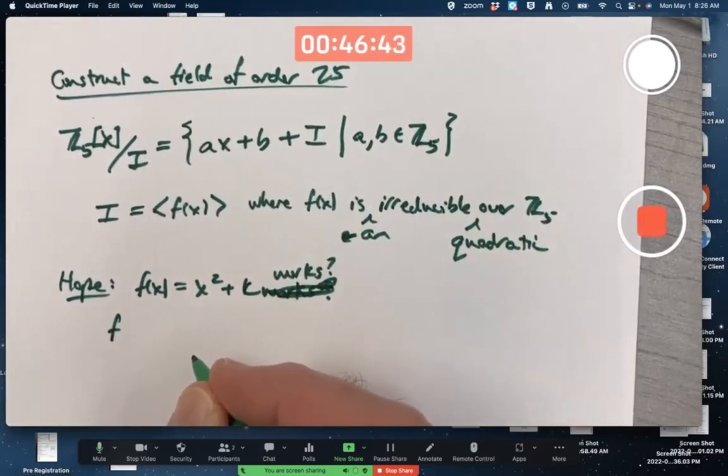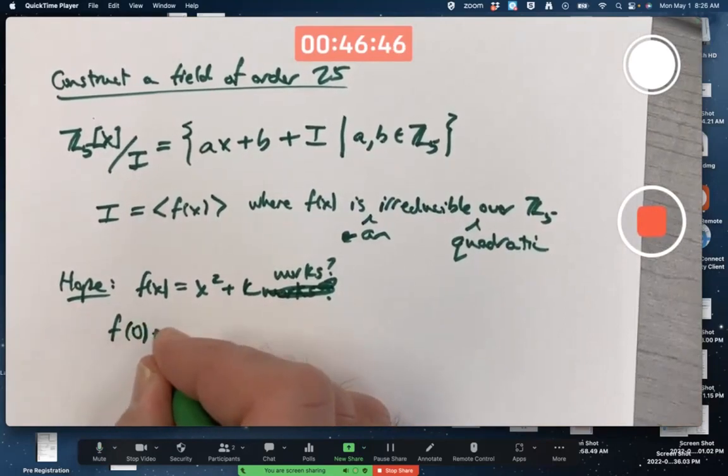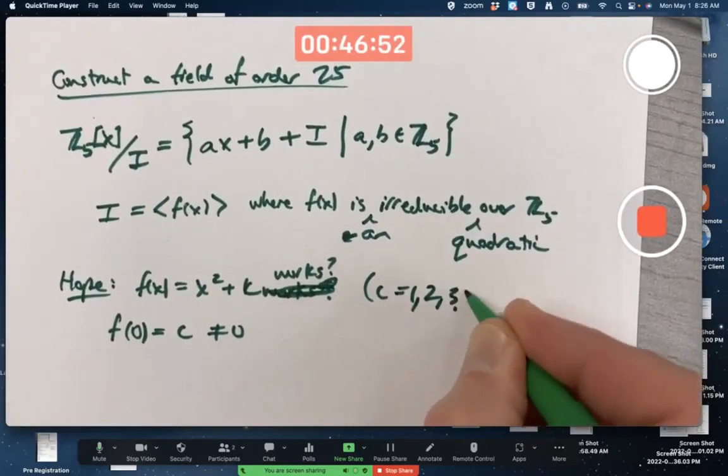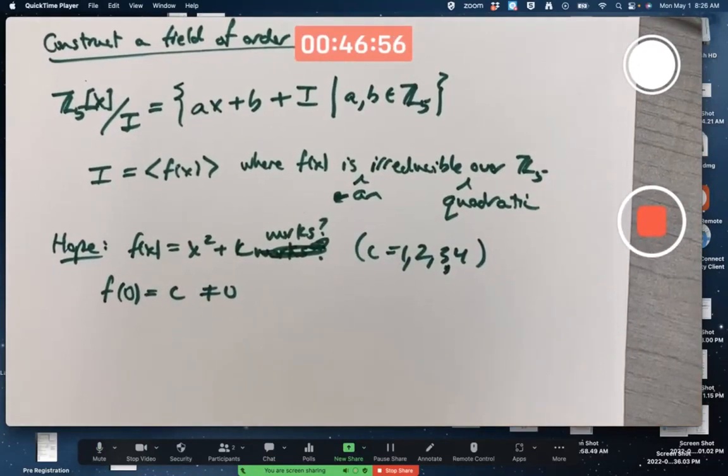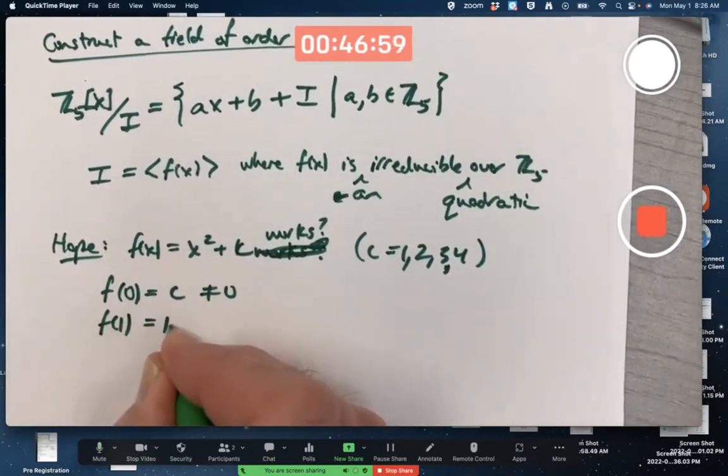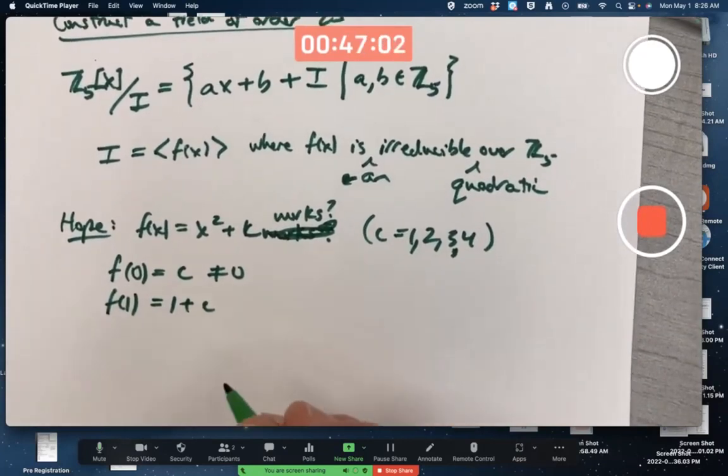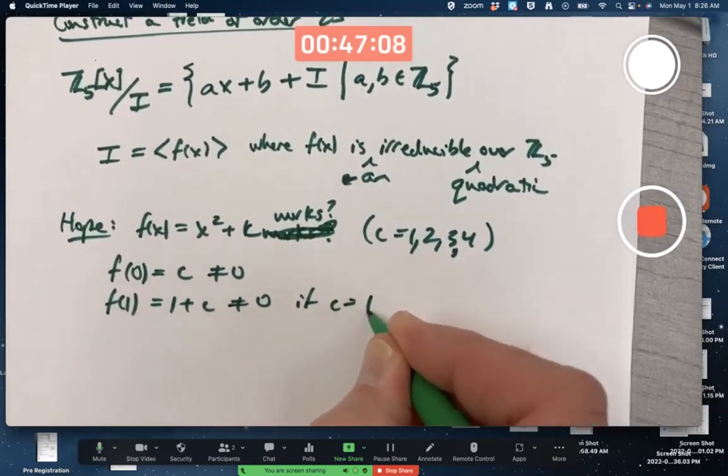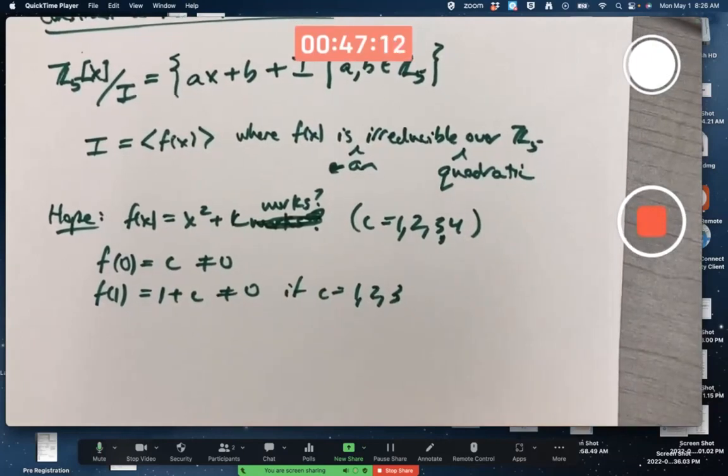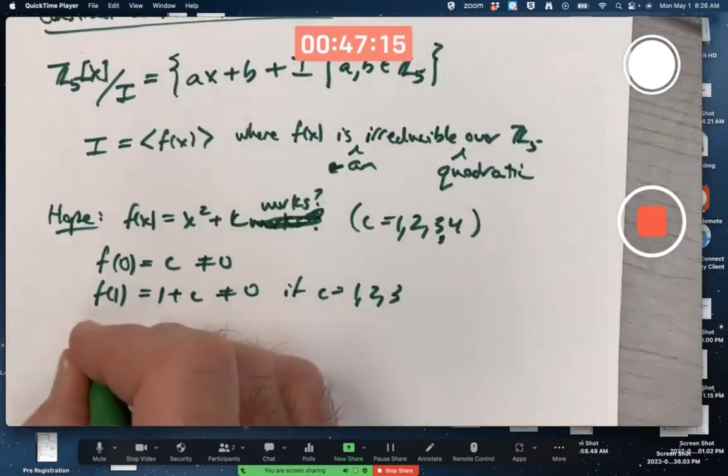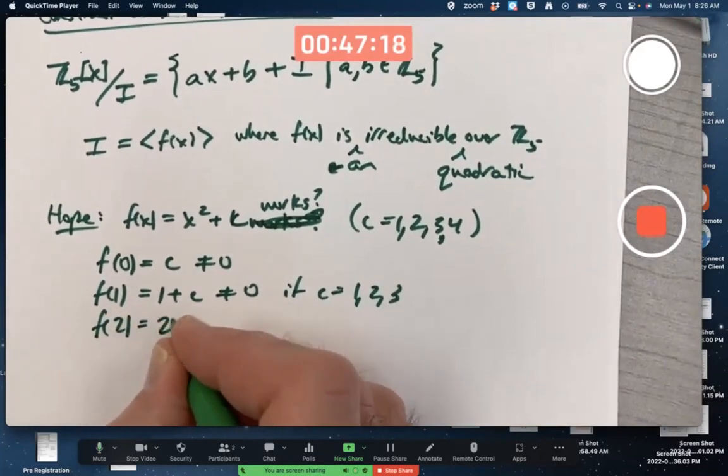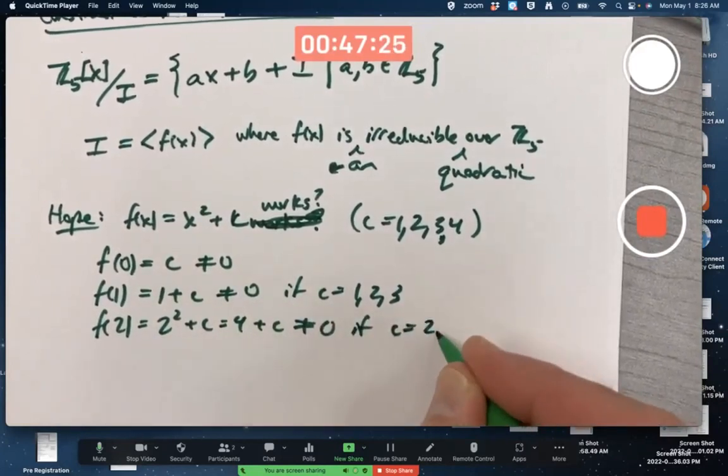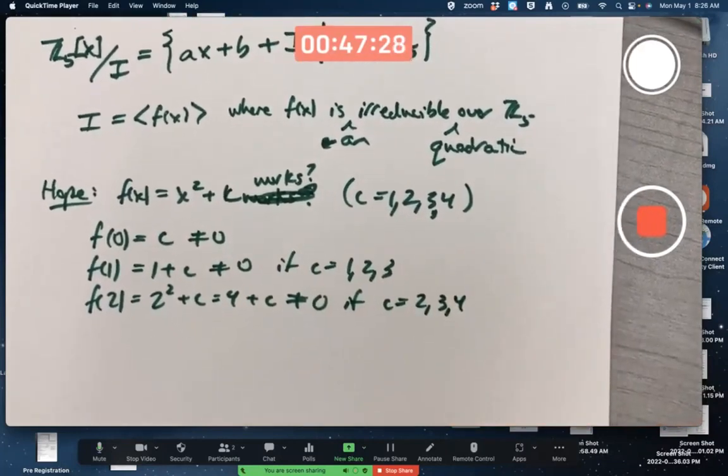And it is quadratic. It's going to be irreducible if and only if it's got no zeros in Z5. So, what's f of 0? It's c, not 0. c is going to be 1, 2, 3, or 4. There's no guarantee that any of these are going to work, but you're just hoping. f of 1 would be 1 plus c, and that'll not equal 0 if c is 1, 2, or 3, not 4 though, because we're modding by 5.